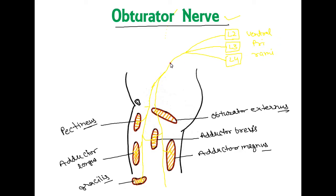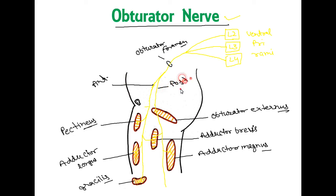To summarize: the obturator nerve arises from L2, L3, and L4, passing through the obturator canal formed by the obturator foramen. It divides into the anterior division — passing anterior to obturator externus, behind pectineus and adductor longus, anterior to adductor brevis, reaching the gracilis and supplying four muscles — and the posterior division, which pierces obturator externus, passes between adductor brevis and magnus, and continues downward as the genicular branch.